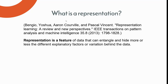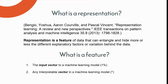Here is a popular paper which makes a definition for representation: a representation is a feature of data that can entangle and hide more or less the different explanatory factors of variation behind the data. So, representation is a feature. A feature could be the input vector to a machine learning model, or it could be any interpretable vector in a machine learning model.